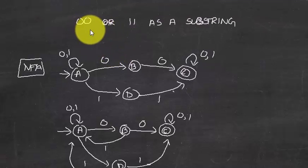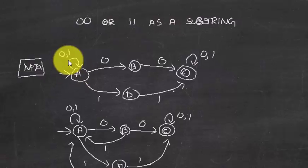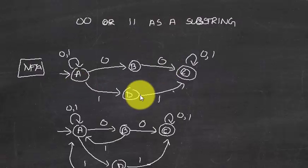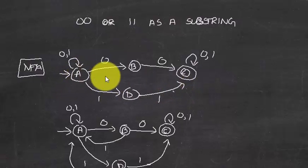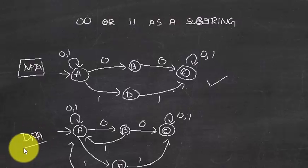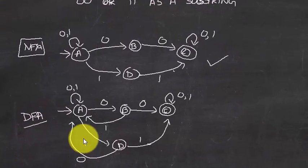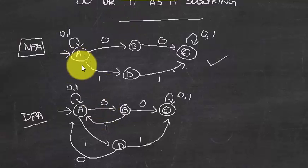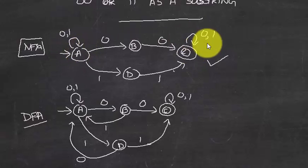Let's look at another example: strings such that 'zero zero' or 'one one' is a substring. We don't care what we get in the beginning or at the end — as long as we get 'zero zero' or 'one one' as a substring, we are done. The diagram can take two paths: either get 'zero zero' as a substring or get 'one one' as a substring.